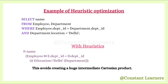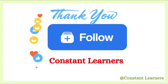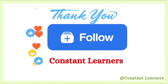Heuristic methods are generally simpler and faster to implement compared to cost-based optimization, which involves calculating the cost of various execution plans. This makes them suitable for scenarios where quick optimization is crucial or when cost-based optimization is computationally expensive. That was all for this video. I'll see you in the next one discussing relational calculus with domain and tuple calculus. If you liked this video, don't forget to give it a thumbs up, subscribe to the channel, and thank you so much for watching.